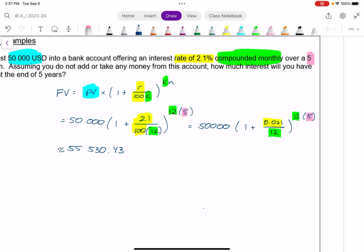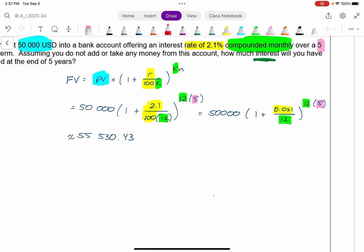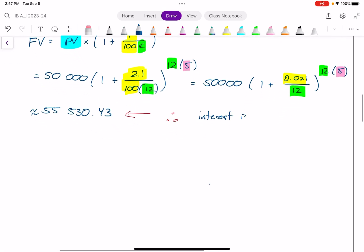And so keep in mind, we are asking for how much interest, which means how much more did we actually end up with compared to what we started. And so I can see here, the interest, therefore, is going to be this value, take away the 50,000. So therefore, the interest is $55,530 and change minus my initial amount, which in this case, I don't need a calculator is $5,530.43. That's how much money we actually made.